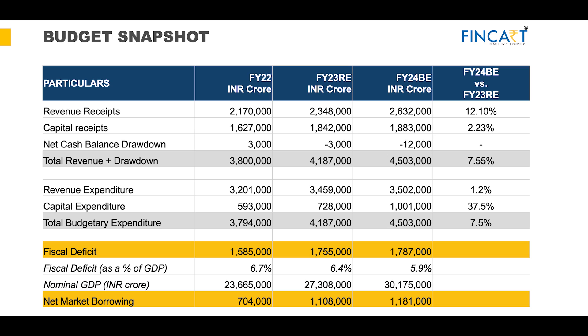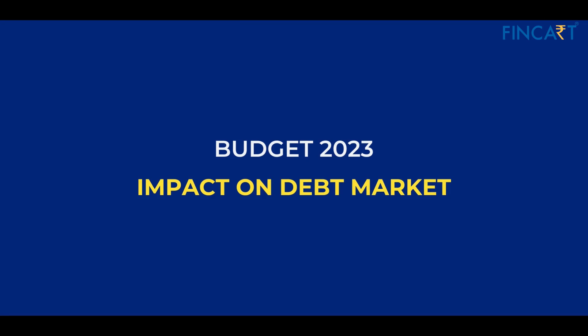What is very enlightening is that capital expenditure is expected to grow by 37%. The budget has kept revenue expenditure low while making capital expenditure very high, which is a strong and positive signal for the economy.